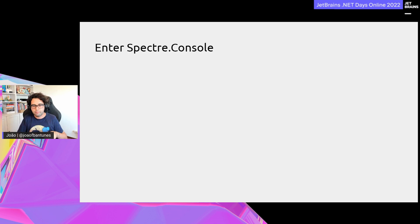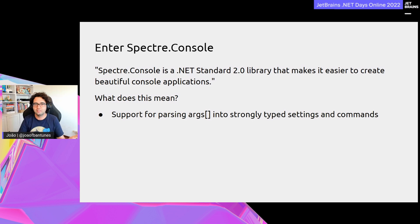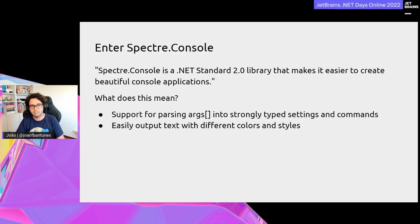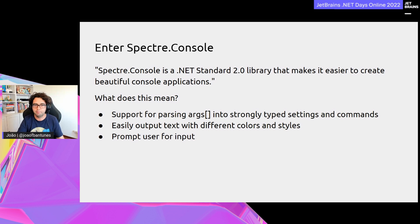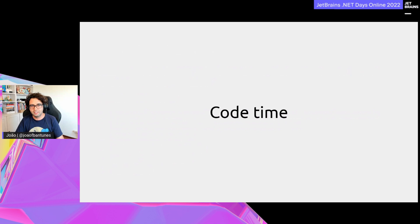Fortunately, there are options to improve even these quick-and-dirty use cases, and that's where Spectre Console comes in. Spectre Console is a .NET Standard 2.0 library that makes it easier to create beautiful console apps. It supports easy parsing of arguments into strongly typed settings and commands, outputting text with different colors and styles, prompting the user for input, rendering complex widgets, displaying task progress, and more.